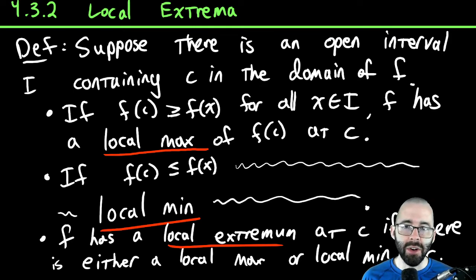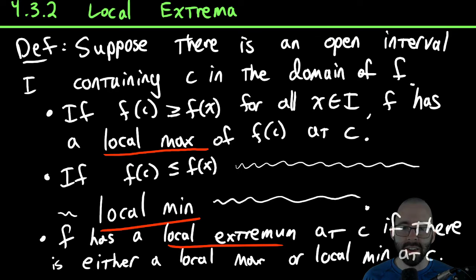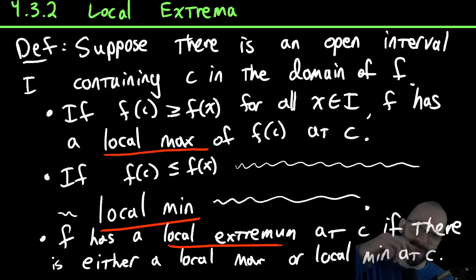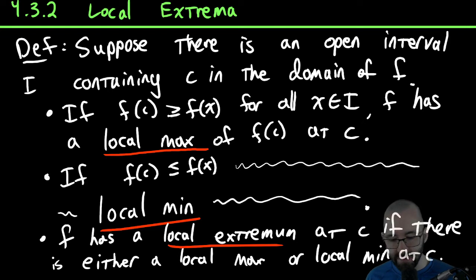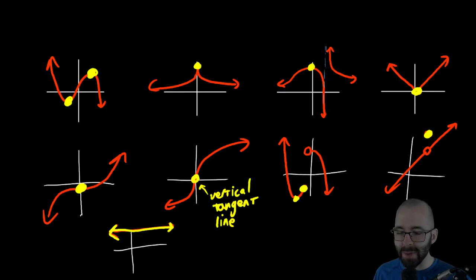Local extremum just means: is there either a max or a min? It's just a definition that incorporates both of those things together. So if there's a local max, there's a local extremum — local extremum just incorporates maxes and mins. That's pretty much it for our definitions.